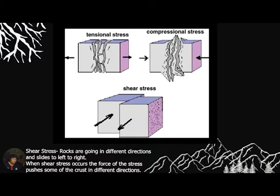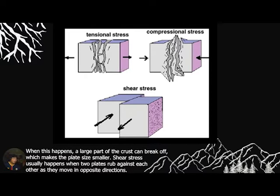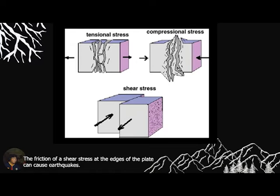Shear stress occurs when rocks move in different directions, sliding left to right. When shear stress appears, the force pushes parts of the crust in different directions. A large part of the crust can break off, making the plate size smaller. Shear stress usually happens when two plates slide against each other. As they move in opposite directions, the friction at the edges of the plates can cause earthquakes.